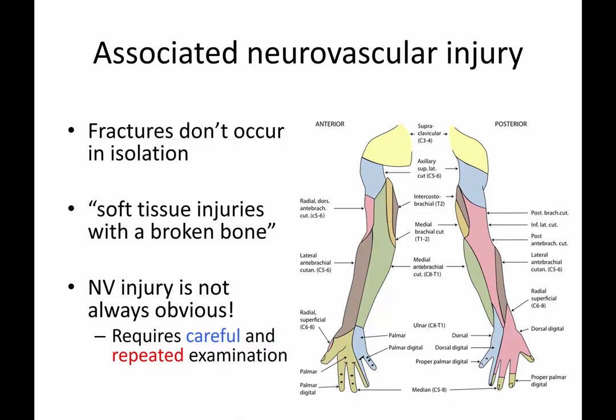This is our fourth video on General Principles of Orthopedic Trauma. We're going to talk about associated injuries, get into some case examples of hip fracture, and also discuss some different types of fractures you may see.